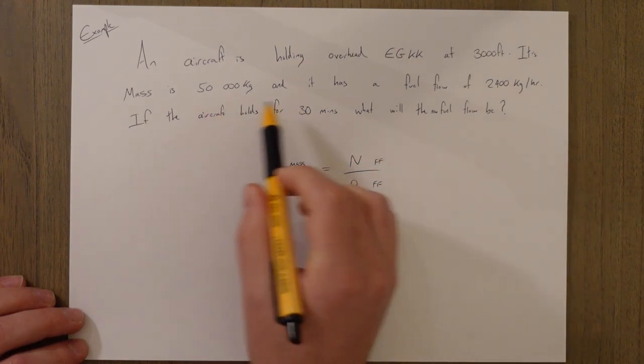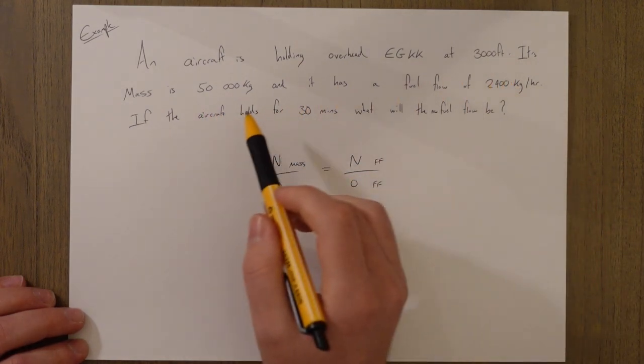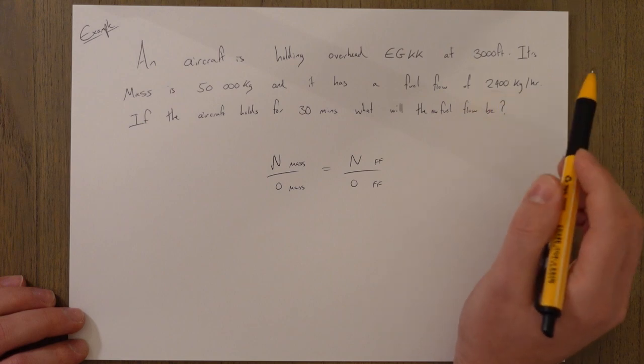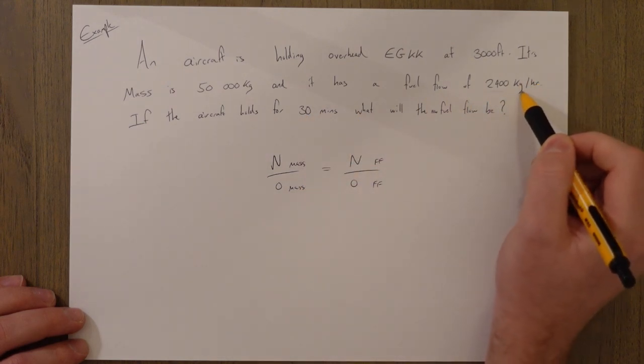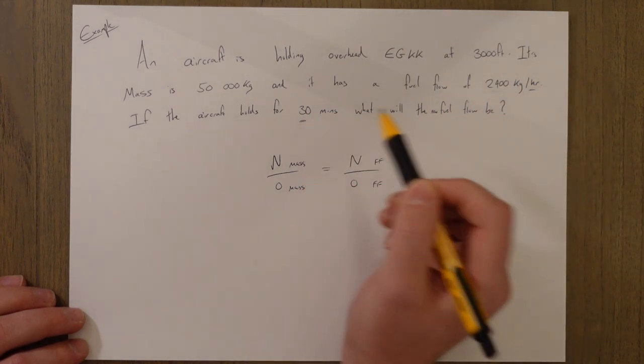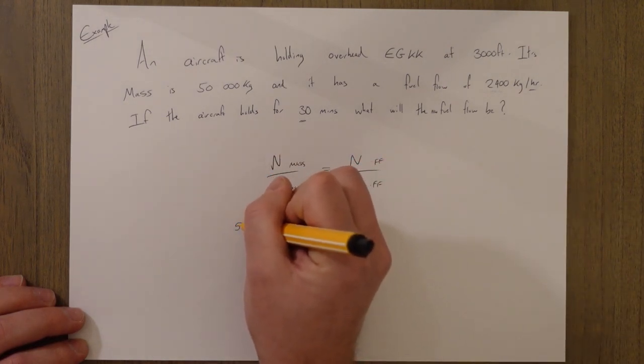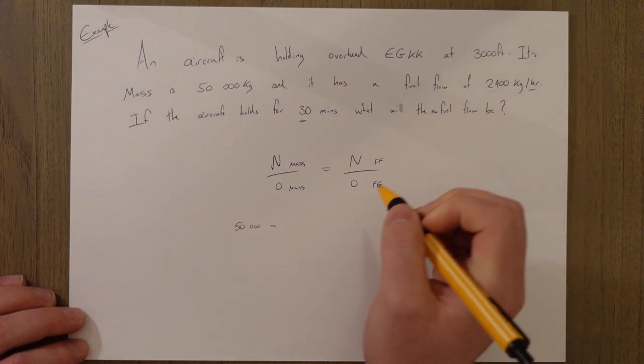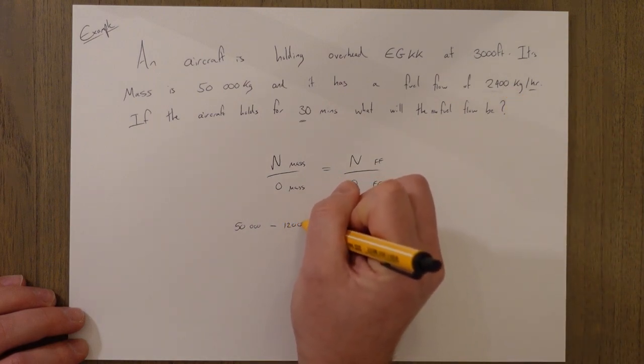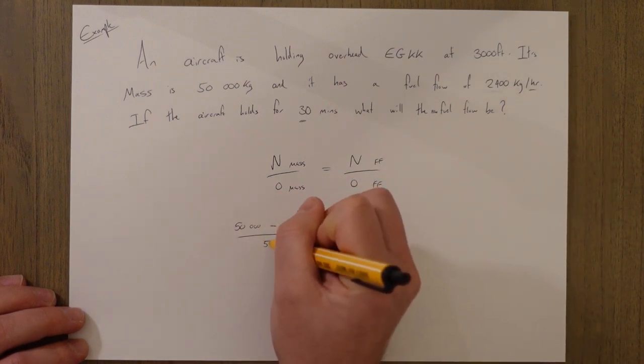So our new mass is going to be half of the fuel flow because we're burning that's kilograms per hour, we're only going for 30 minutes. So our new mass is going to be 50,000 minus 1,200 over the old mass which is 50,000.